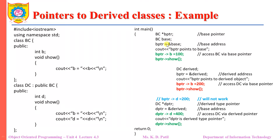I have one more class, that is DC, which is inherited from class BC. Now DC has its own members, that is integer D and void show. This void show function is going to display the values of B and D on the screen respectively. Now let us see how the pointers are created from base class BC and derived class DC.